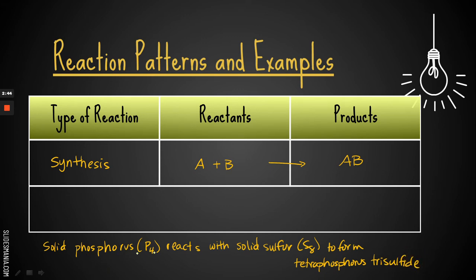So solid phosphorus reacts with solid sulfur. So we're going to put P4 solid plus S8 solid makes tetraphosphorus, so that's P4 trisulfide, S3. Now I didn't tell you if it's solid or not, so you don't have to worry about a state symbol here. Now again, this is not a balanced equation. I'm not really worrying about balancing these right now because I want just for us to see the patterns. I just want you to concentrate on the pattern, which is several small reactants making one big product. So this is your first reaction, and it is called a synthesis reaction.